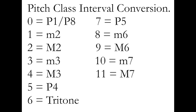Really quickly, a little chart to point out the conversions between our pitch class intervals and tonal intervals. We have those 11 intervals: 0, our perfect unison, perfect octave; 1, a minor second; 2, a major second; all the way up to 11, a major seventh.